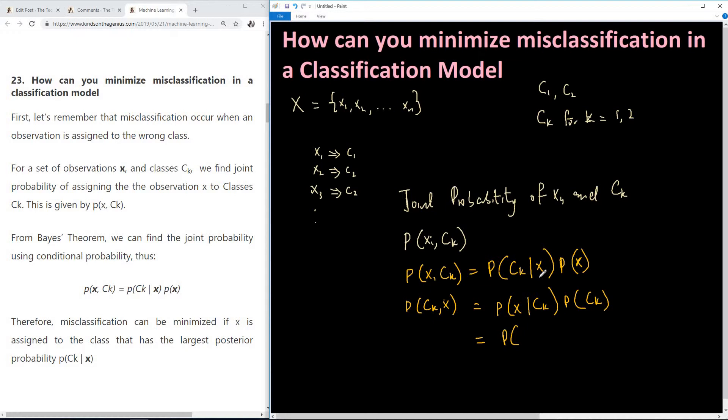So this probability that x belongs to a class Ck after measuring the value of x is called posterior probability. So for us to minimize misclassification we need to assign x to a class with the highest posterior probability P(Ck given x).